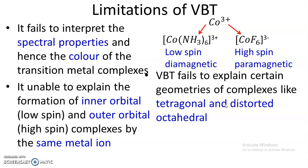Valence bond theory is also unable to explain certain geometries such as tetragonal and distorted octahedral. Tetrahedral, square planar, and regular octahedral geometries were explained, but geometries like tetragonal and distorted octahedral remained unexplained on the basis of valence bond theory.